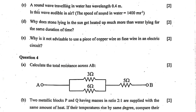Question 3d: Why does stone lying in the sun get heated much more than water for the same duration? Water has a high specific heat capacity of 4200 J/kg/K, higher than stone, so for the same amount of heat supplied, stone shows a much higher rise in temperature. Question 3e: Why is it not advisable to use copper wire as fuse wire? Copper has a high melting point compared to fuse wire, so it will not melt even if the current exceeds the safe limit.